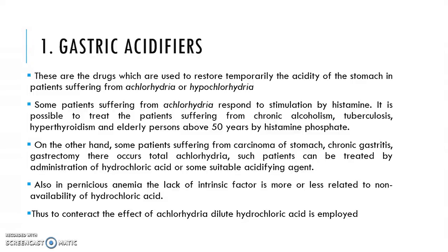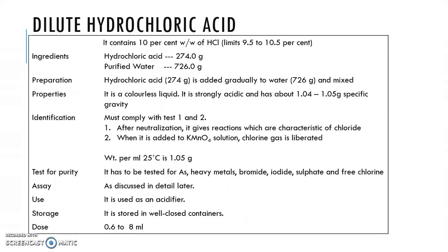The most common acidifier to be administered is dilute hydrochloric acid. This is the monograph for dilute hydrochloric acid, covering the ingredients, preparation, properties, identification tests, purity tests, and assay. For example, the properties state it should be a colorless liquid, strongly acidic, with a specific gravity of 1.04 to 1.05 grams.